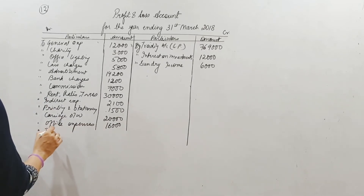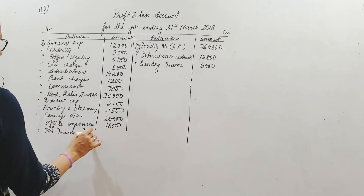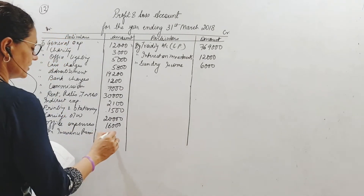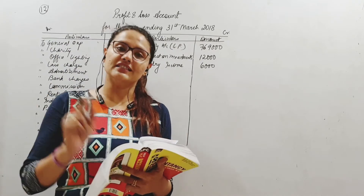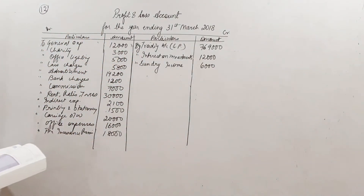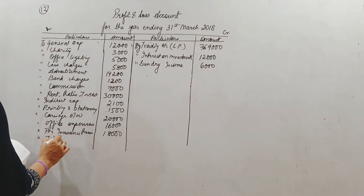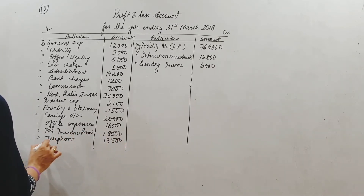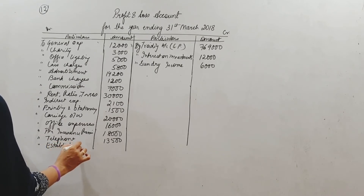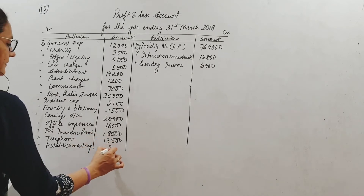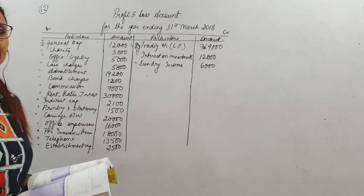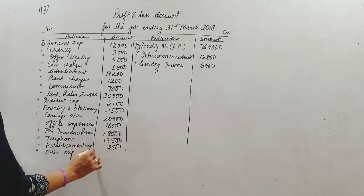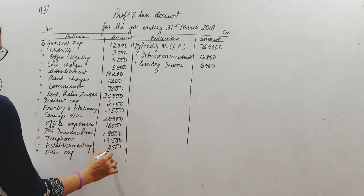Fire insurance premium: whenever you get your goods insured, you pay a premium — that's the cost of covering your risk. Usually fire insurance covers only one year, so it's a revenue expense. Telephone charges: 13,500. Then establishment expenses — meaning whatever your office setup and maintenance is. Miscellaneous or sundry expenses: 7,100.